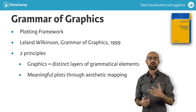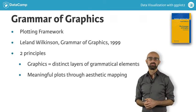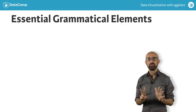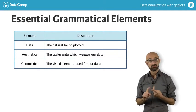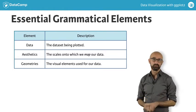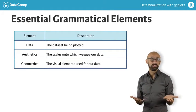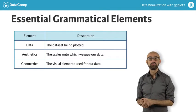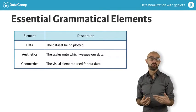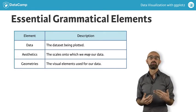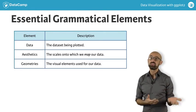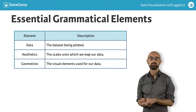Let's explore grammatical elements first. There are seven grammatical elements in total, and three of them are essential: data, aesthetics, and geometries. The data is obviously the data which we want to plot. The aesthetics refers to the scales onto which we want to map our data. And the geometry layer refers to the actual shape the data will take in the plot.